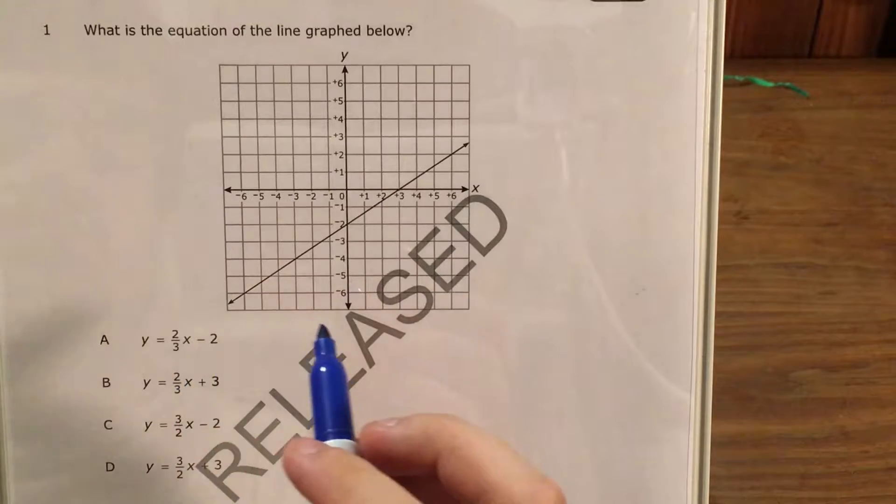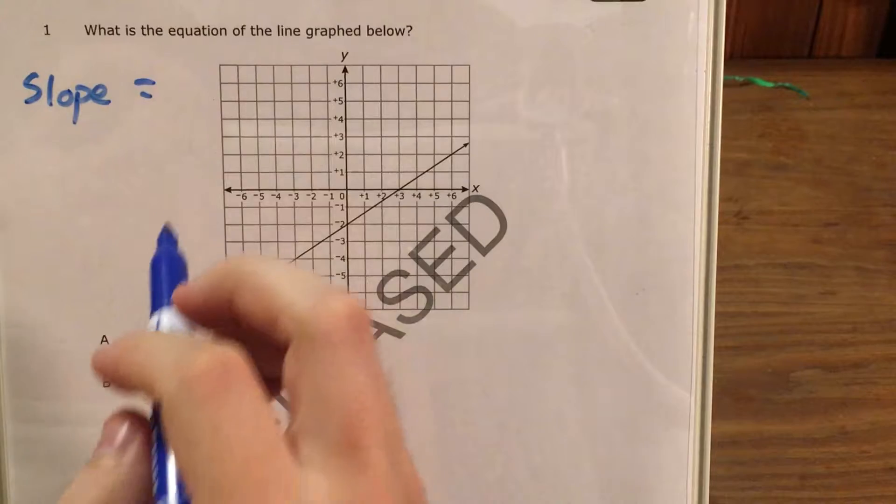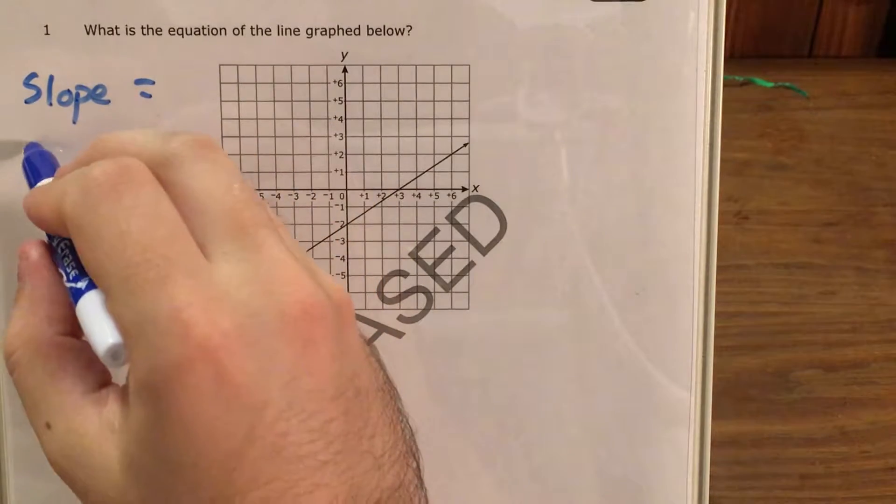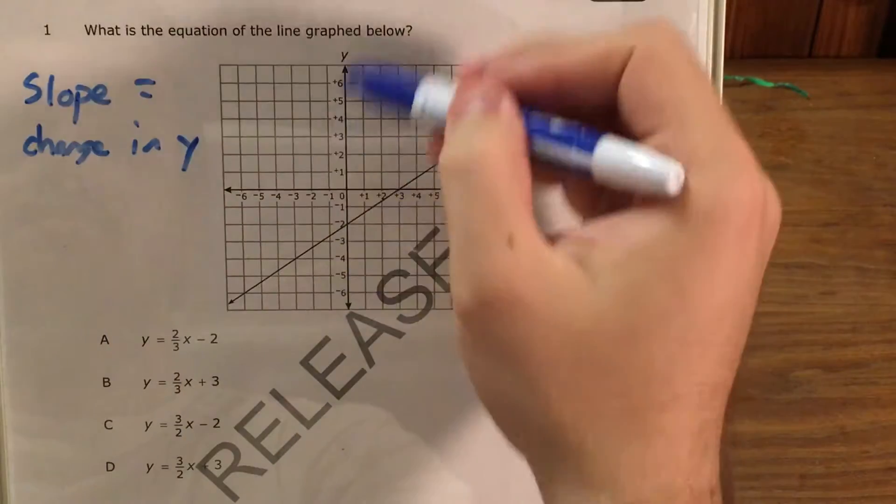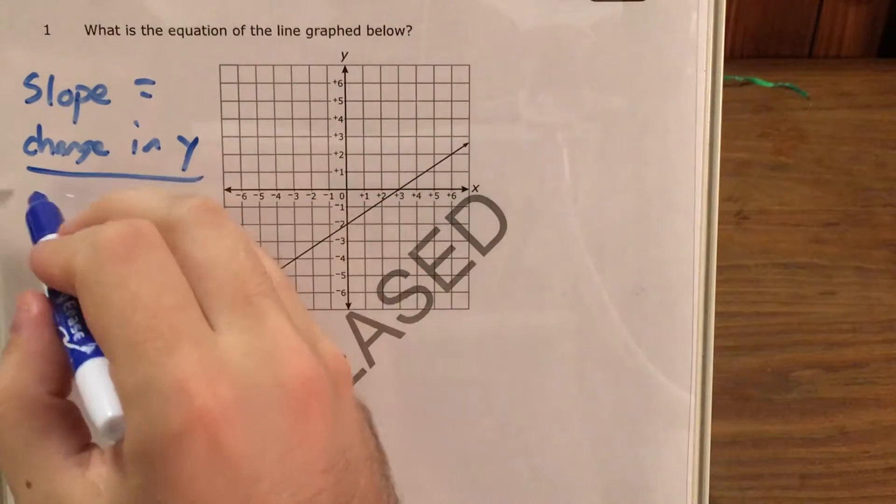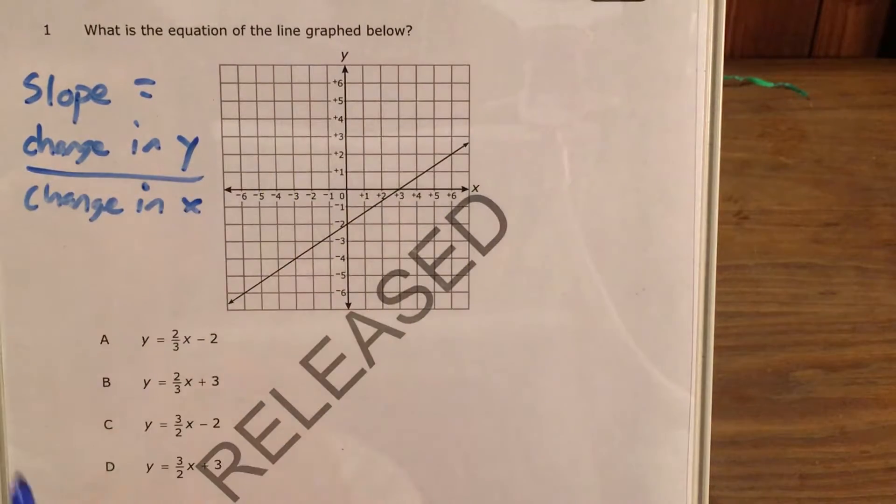So let's take these in order. Our slope—you might see it as the change in y, how far up or down we're going, over the change in x, left or right.